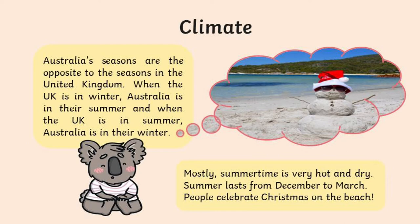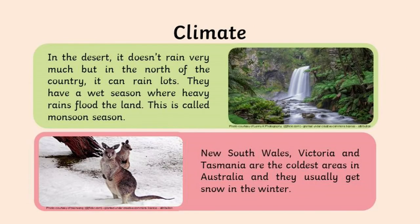Their summers are warmer than ours. Obviously, depending on where they are in Australia — because it is such a large country — they have quite varying weather within their own country. But in general, their summers are a lot warmer than our summers. Their climate can differ depending on where you are within Australia.